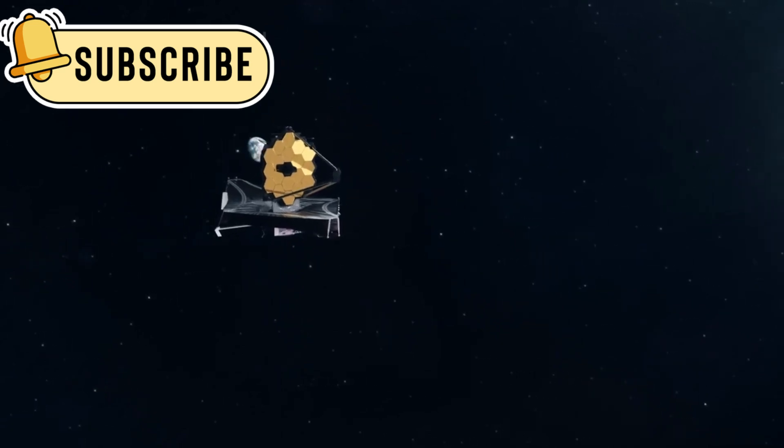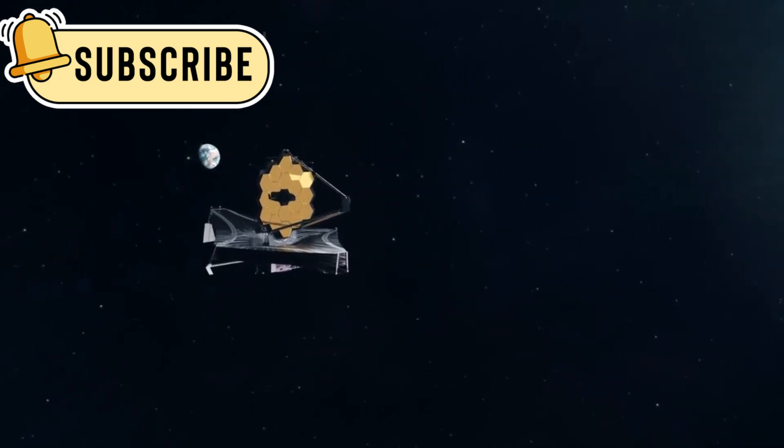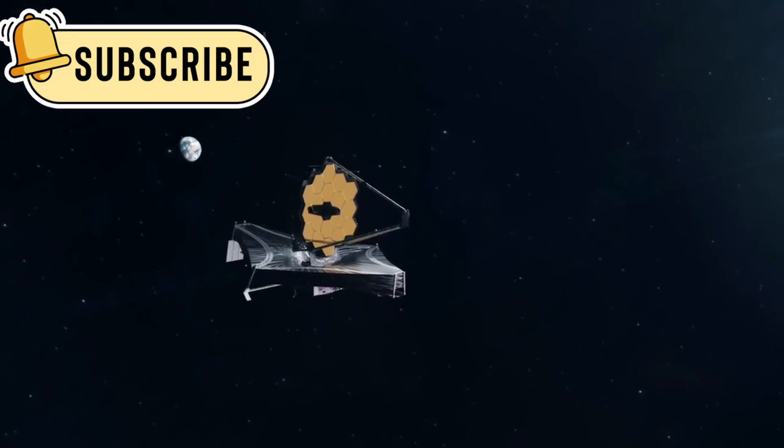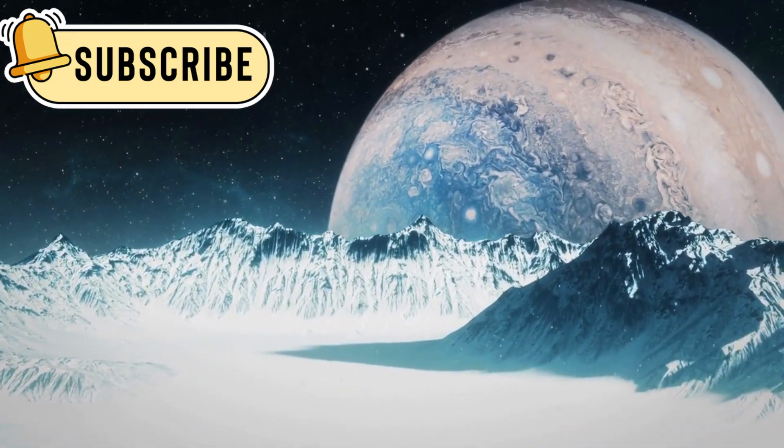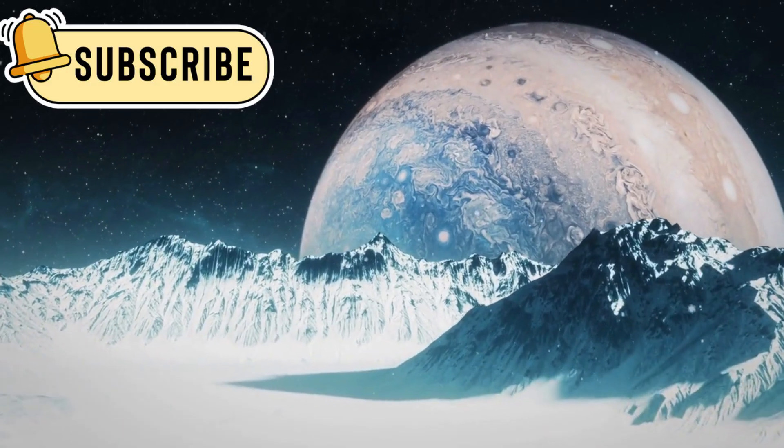The James Webb Space Telescope has brought many new and exciting discoveries from the far reaches of space. One of the most surprising involves Pluto, a world once believed to be nothing more than a frozen rock drifting at the edge of our solar system.